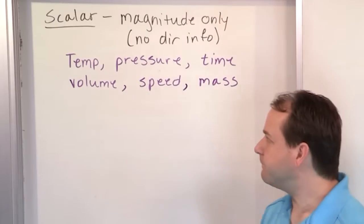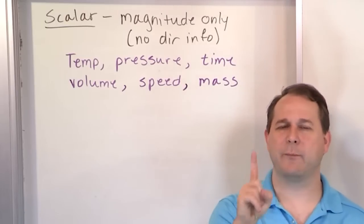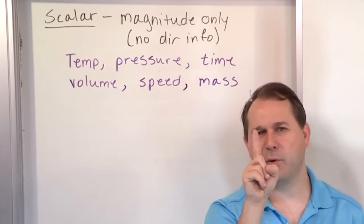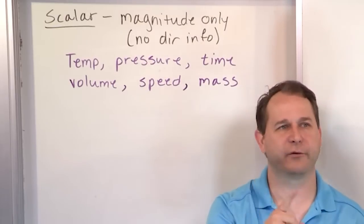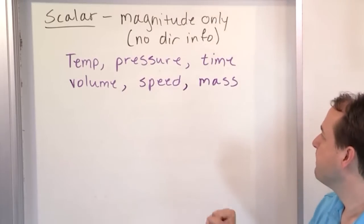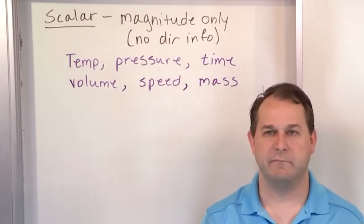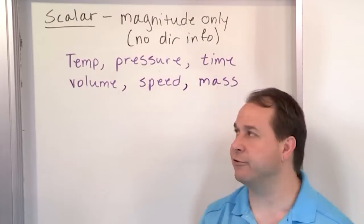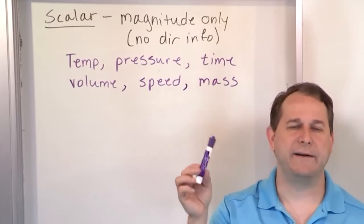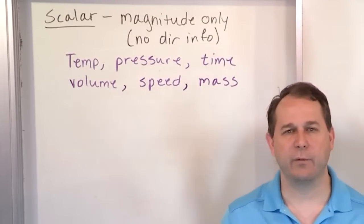Magnitude is how big the number is. All of these share the same kind of thing. Pressure — you might think it has a direction, but at this point in space the pressure of the gas is acting in all directions pointing into this point. So the pressure, like 34 newtons per square meter, is not pointing any particular direction — it's a value at a point. Volume — if I have a volume of gas here, maybe 34 cubic centimeters, it's not pointing any direction; it's just a value. Speed and mass are the same: this marker has a mass of 0.05 kilograms, but it's not pointing any direction. So scalars are things you've dealt with all your life.